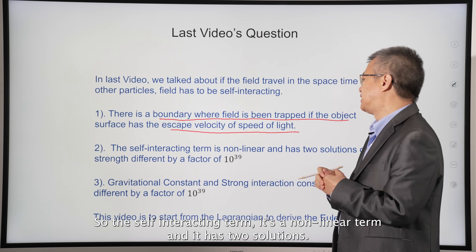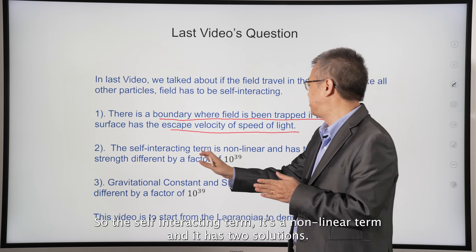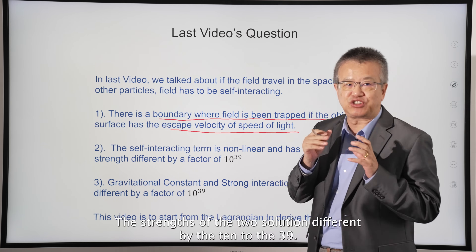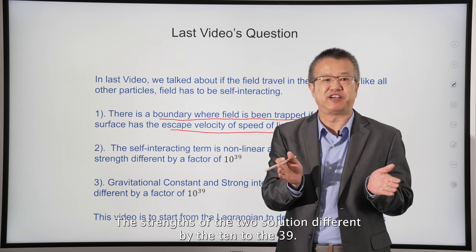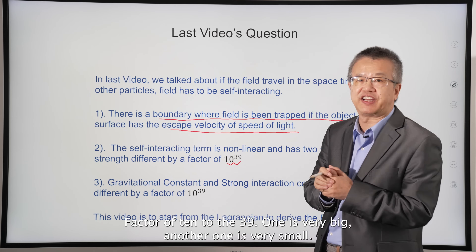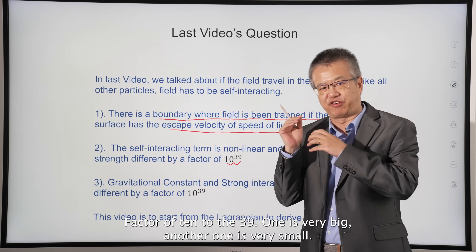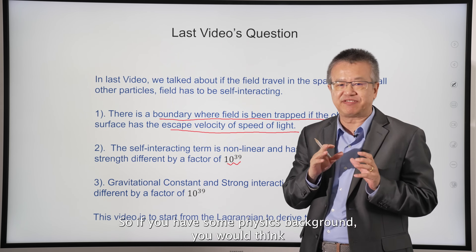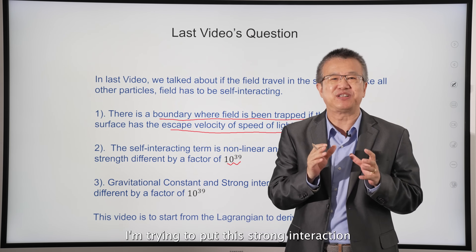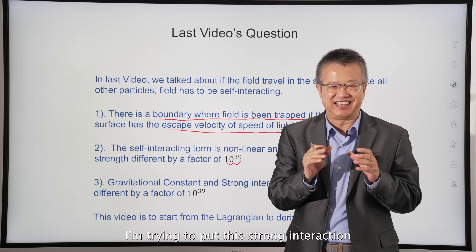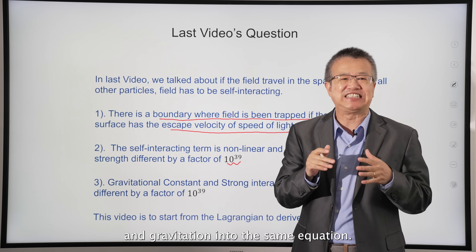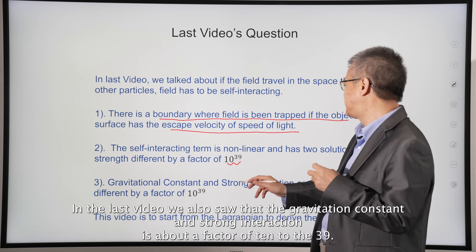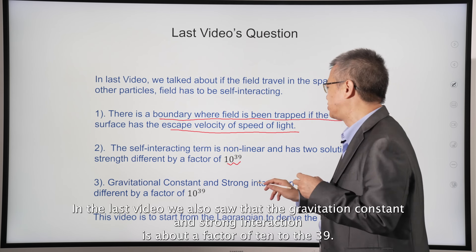The self-interacting term is a nonlinear term and it has two solutions. The two solutions differ by a factor of 10 to the 39 — one is very big, another is very small. If you have some physics background, you might think I'm trying to put the strong interaction and gravitation into the same equation. The gravitational constant and strong interaction constant differ by about that factor.